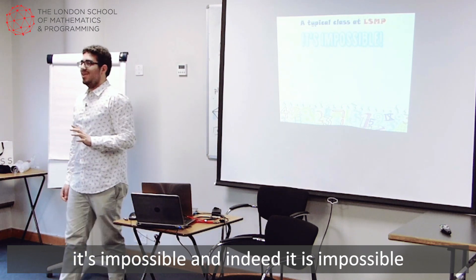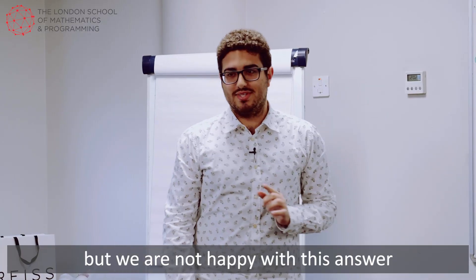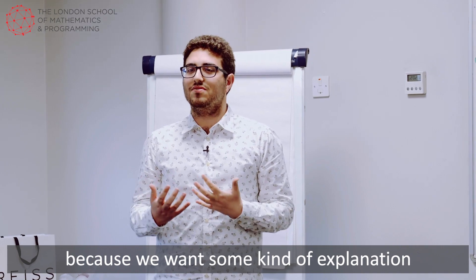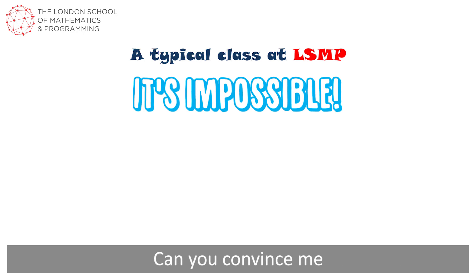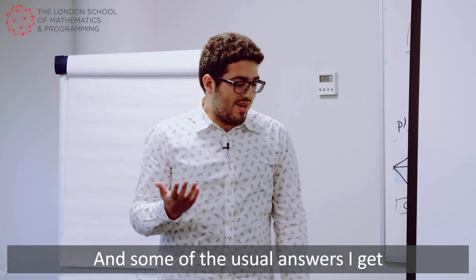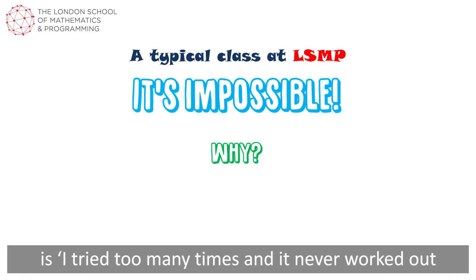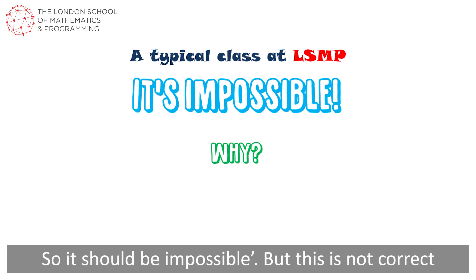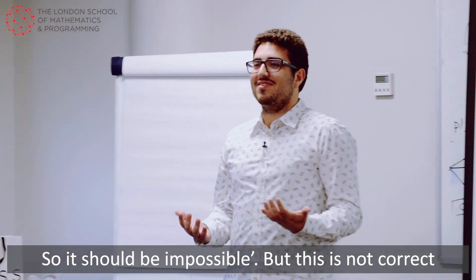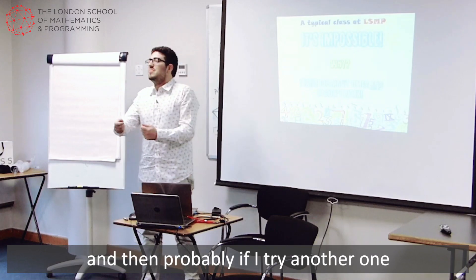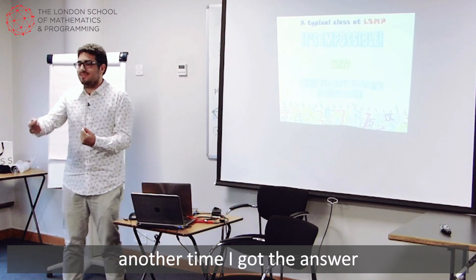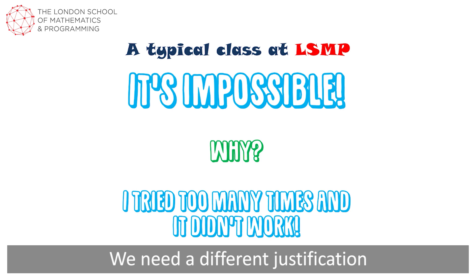And indeed it is impossible. But we are not happy with this answer because we want some kind of explanation. So usually my next question is, why is it impossible? Can you convince me that actually a solution does not exist? And somehow the usual answer I get is, I tried too many times and it never worked out, so it should be impossible. But of course this is not correct because I can try hundreds of times. And then probably if I try another time, I go down. So we need a different justification.